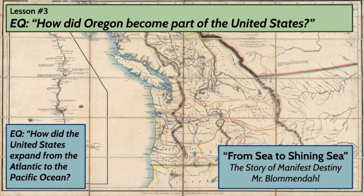Hello, ladies and gentlemen, and welcome to lesson three in our unit on Manifest Destiny, where we are answering the overall essential question: how did the United States expand from the Atlantic to the Pacific Ocean? Today, we're going to answer the essential question: how did Oregon become part of the United States?